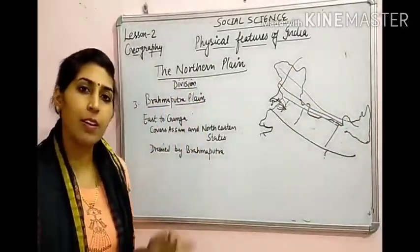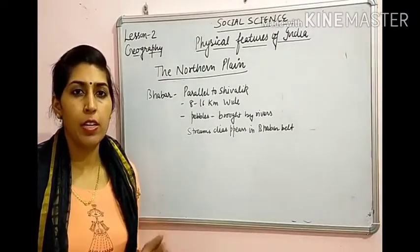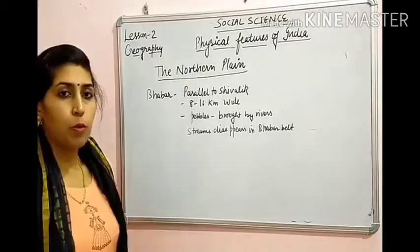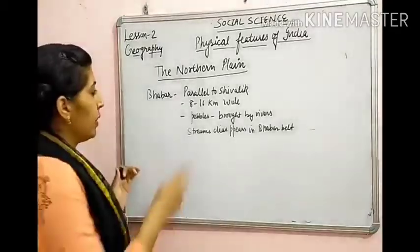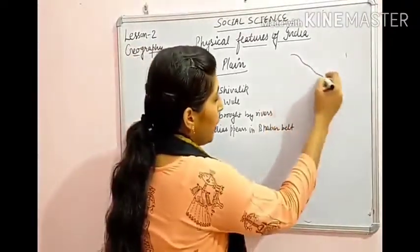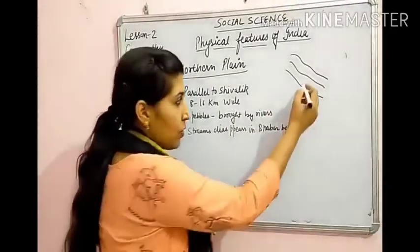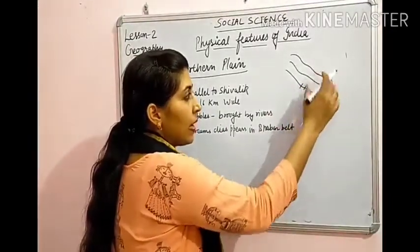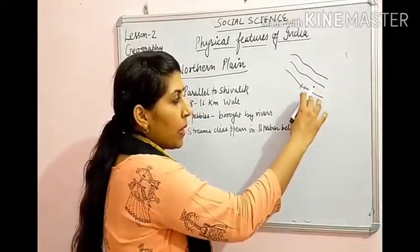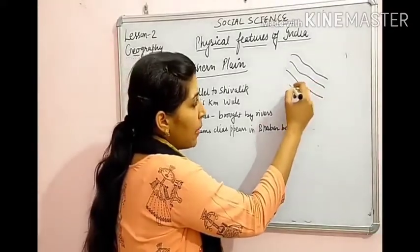Now we will read the longitudinal division — the different relief features of the Northern Plain. The first relief feature is Bhabar, which lies to the south of the Shivalik range. हमने Himalayan ranges पढ़ी थी: Greater Himalaya, Middle Himalaya, और Outer Himalaya यानि Shivalik। Shivalik के बाद Northern Plain start होता है, और सबसे ऊपर Shivalik के south में Bhabar area है।